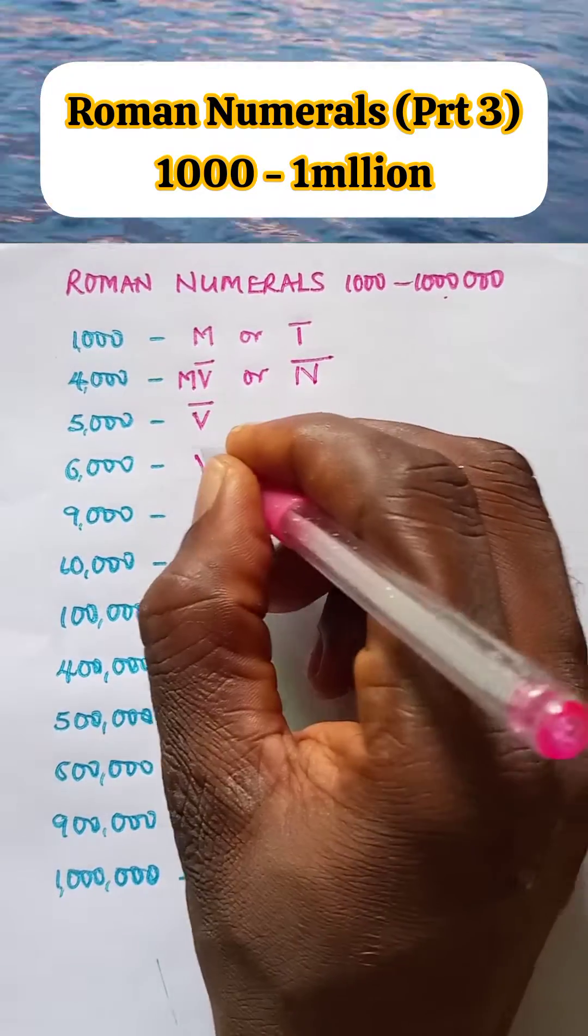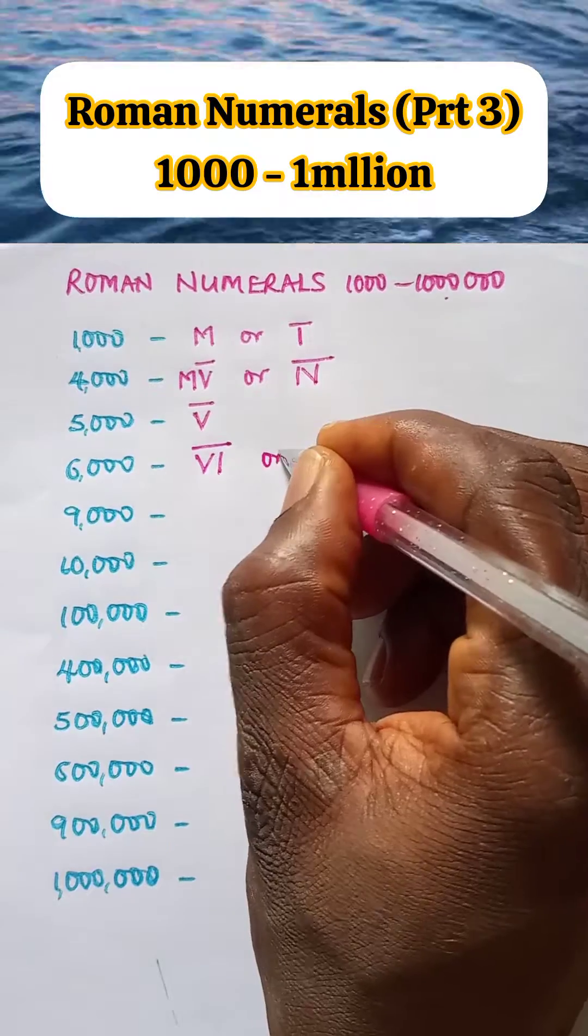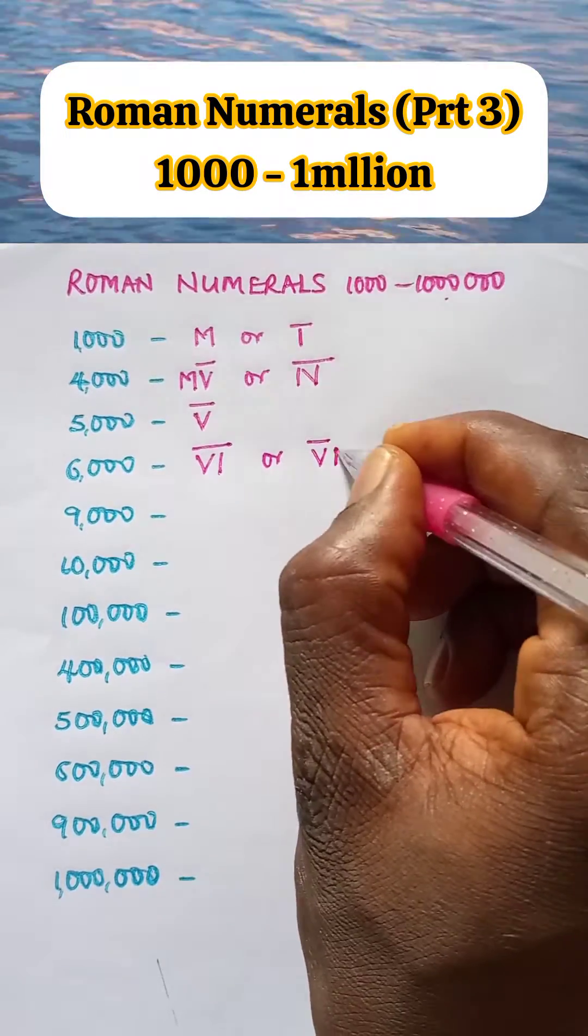Six thousand is VI bar, or V bar which is five thousand plus one thousand, which is M, so VM bar.